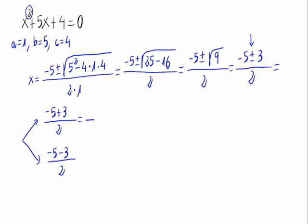Then we have minus 5 plus 3 is minus 2 divided by 2, that is minus 1. And minus 5 minus 3 is minus 8 divided by 2, which is minus 4.